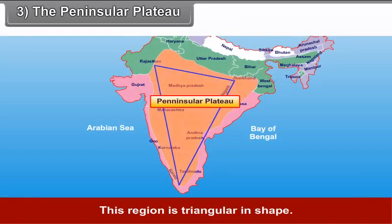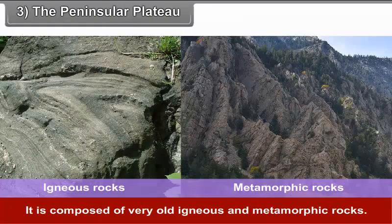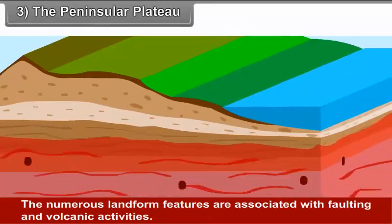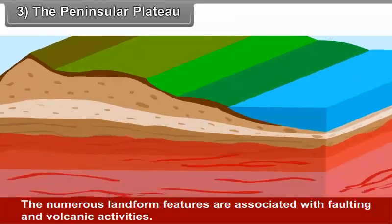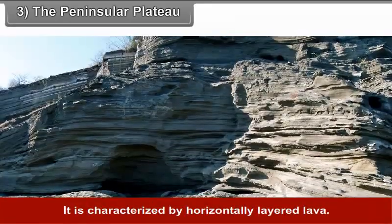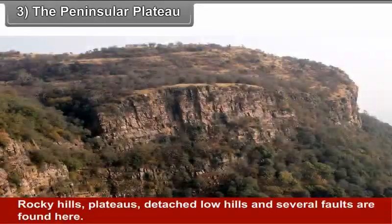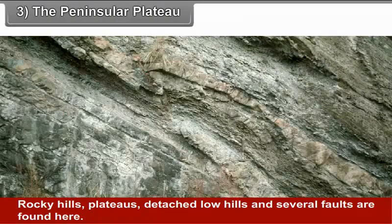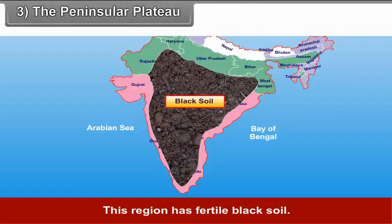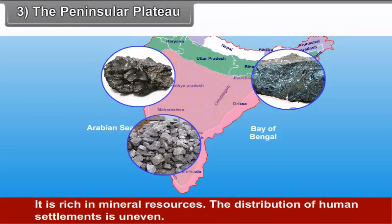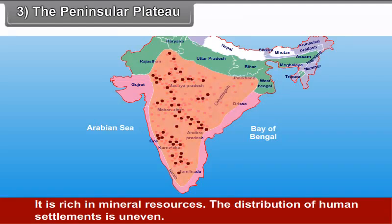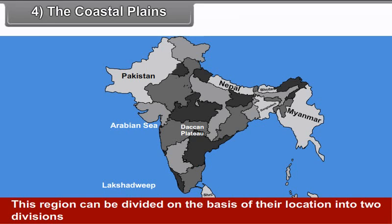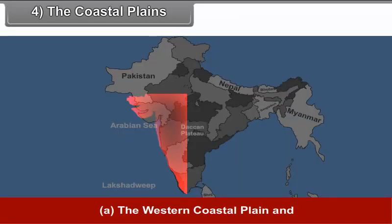The Peninsular Plateau: This plateau is stable compared to other physical divisions. It is one of the oldest landmasses in the world and the largest physical division of India. This region is triangular in shape and composed of very old igneous and metamorphic rocks. The numerous landform features are associated with faulting and volcanic activities, characterized by horizontally layered lava. Rocky hills, plateaus, detached low hills and several falls are found here. This region has fertile black soil and is rich in mineral resources, though the distribution of human settlements is uneven.